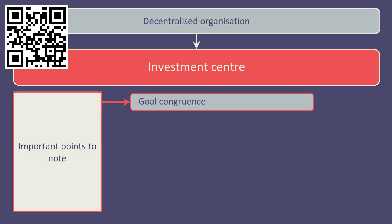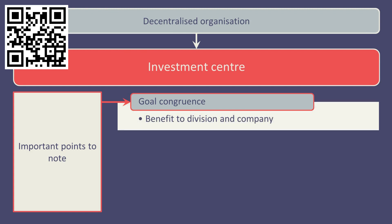Goal congruence. Ideally, divisional managers should make decisions that are in the best interest of not only that division, but also the company or the group as a whole.